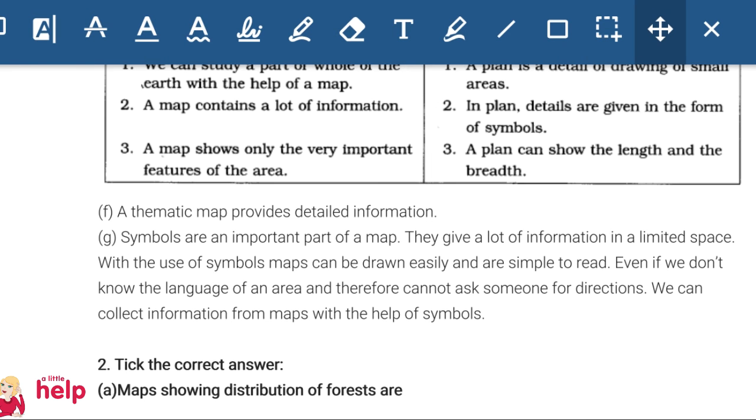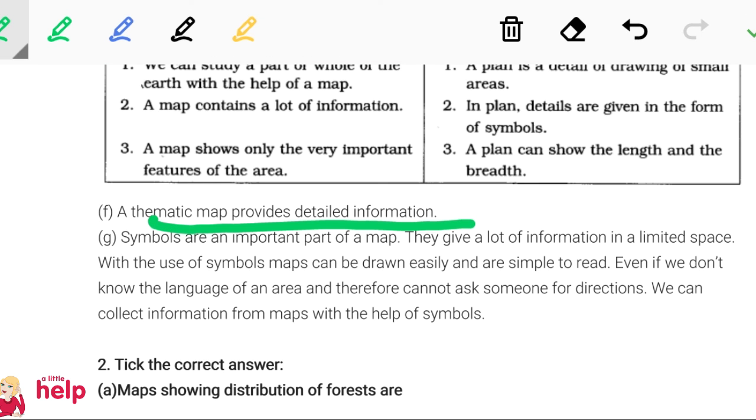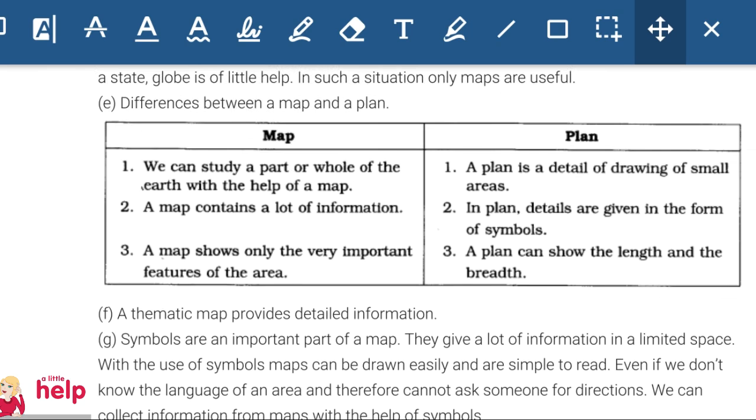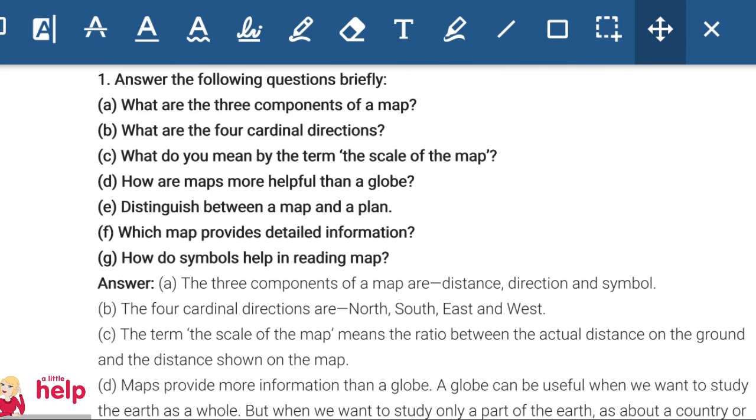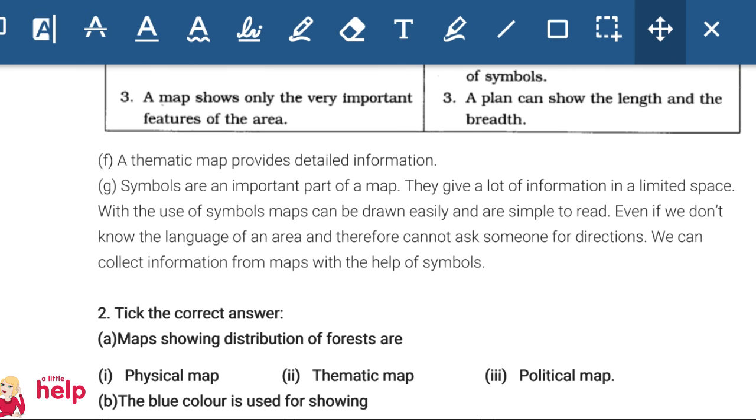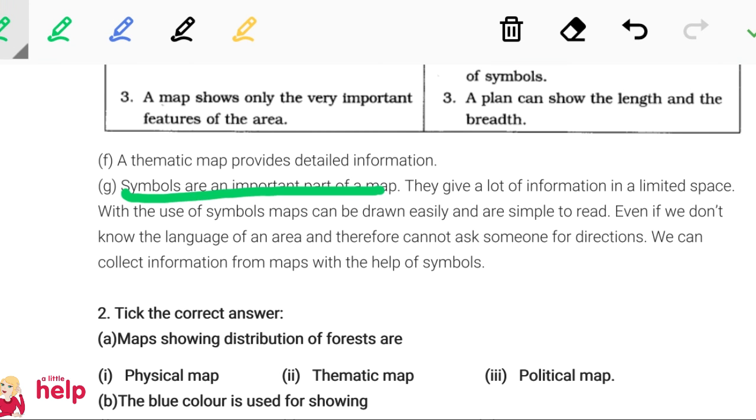How do symbols help in reading maps? Students, symbols are very important for maps because they provide a lot of information in a small, limited space. With symbols, we can see whether there is a mosque, temple, mountain, or land. We don't need to write any language or anything; we just need to show a direction, and we can tell everything.